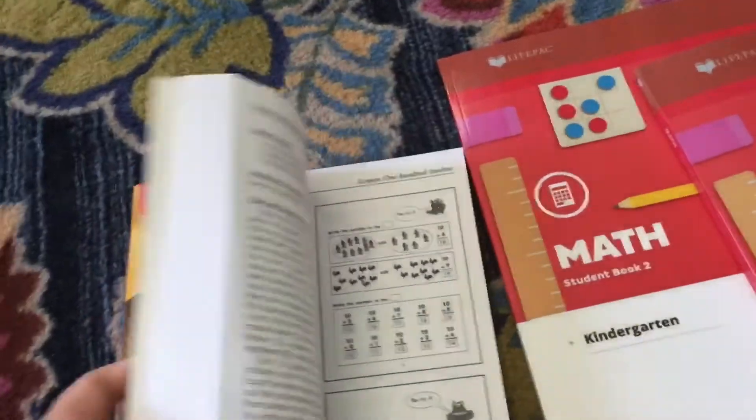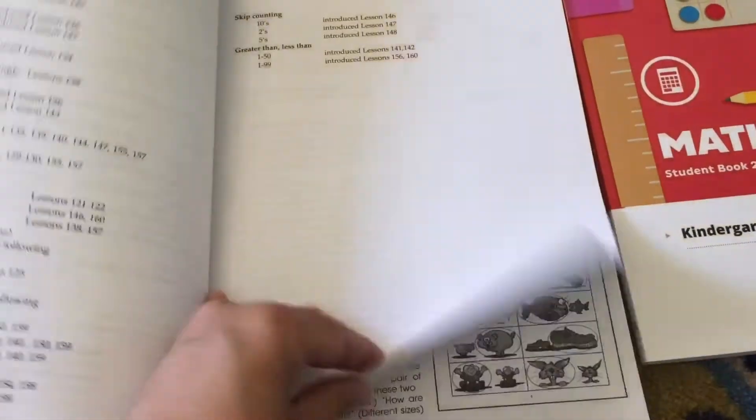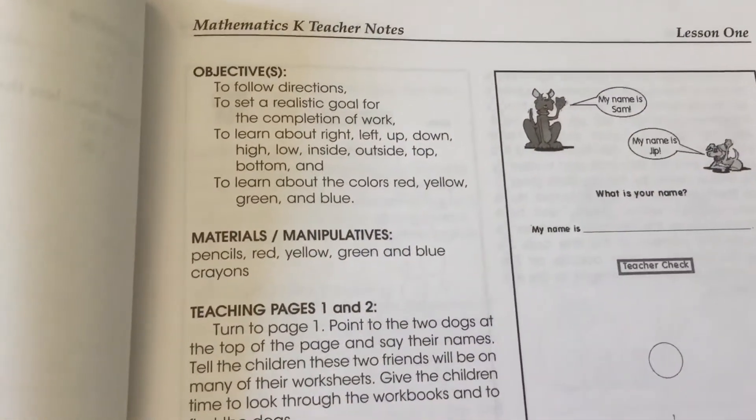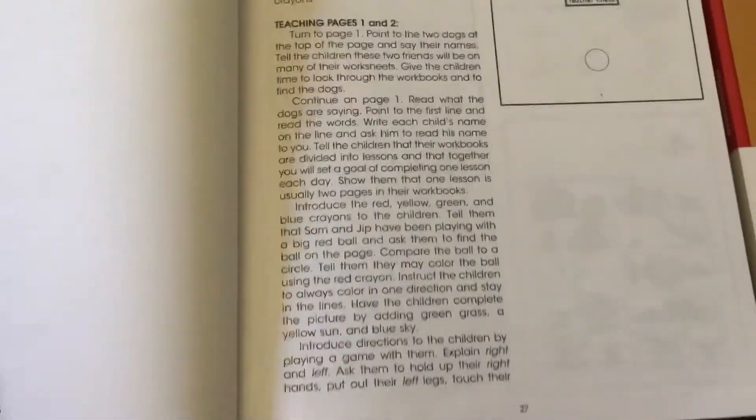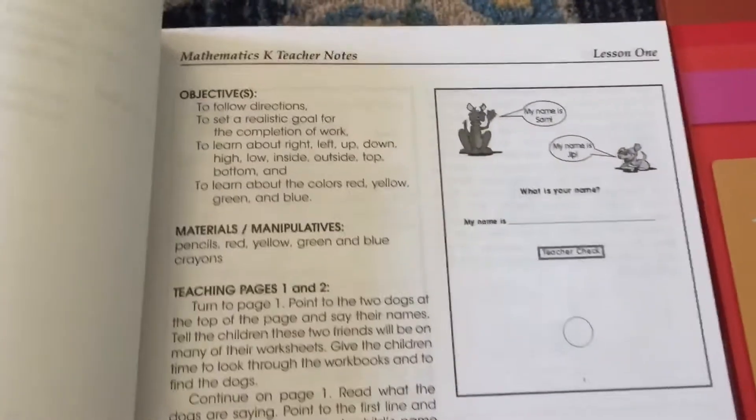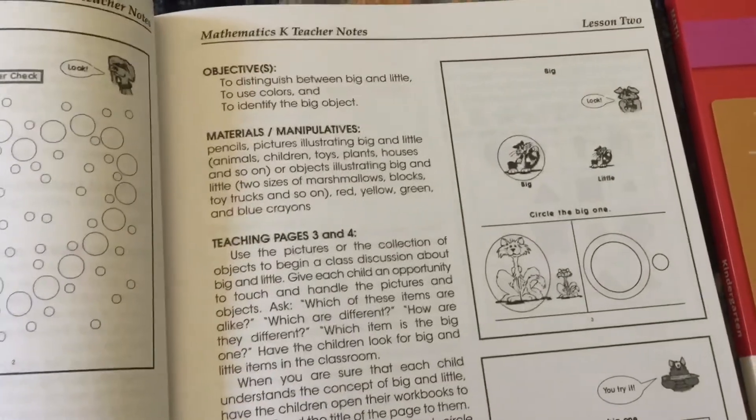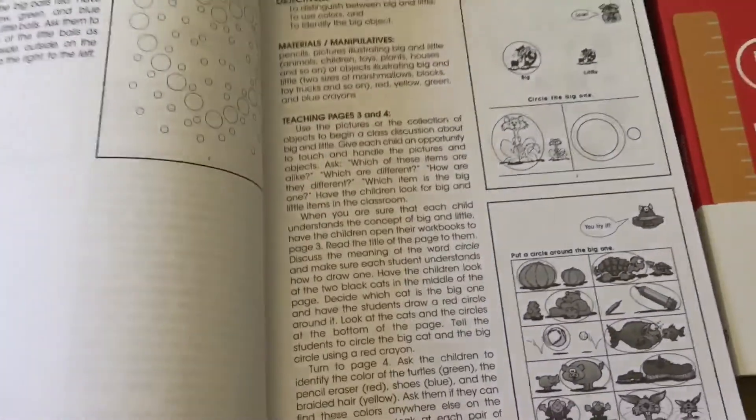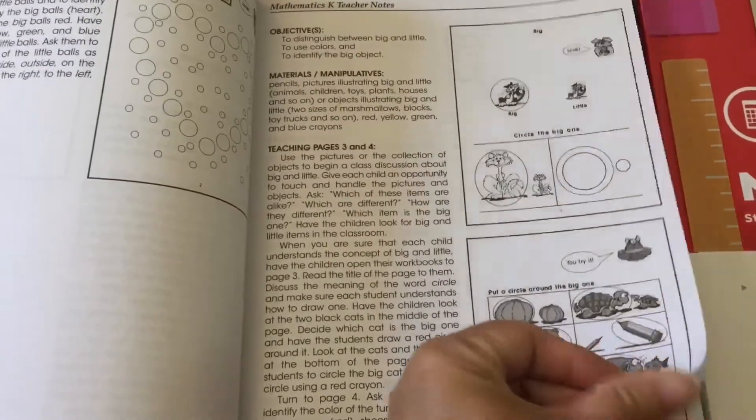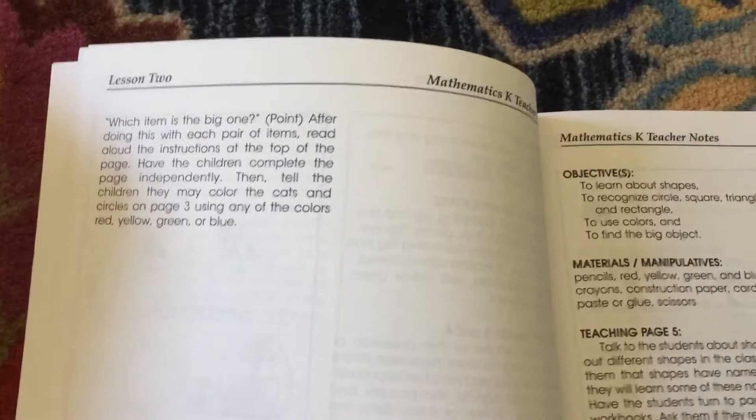There's 160 lessons and there's not that many workbook pages to do and the lessons seem pretty short. So here's lesson one and there's the objectives, it tells you the materials and what teaching pages that the kids have to do. Here's just a sample of what it looks like in their book with full color, and that's it for lesson one.